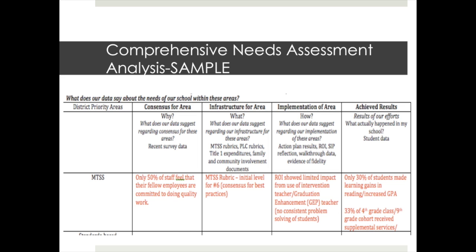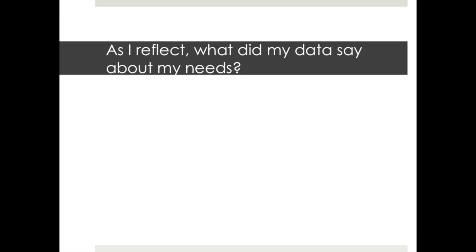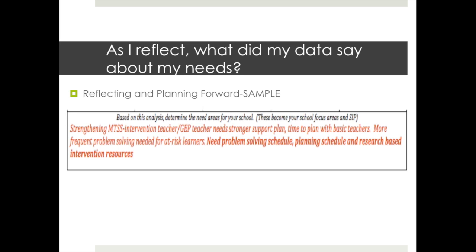When reviewing why this might be, we acknowledged that we did not have strong support structures in place for either teacher, and there was no consistent problem-solving of the at-risk students to plan their interventions and monitor their progress during the year. At the end of the year, only 30% of students served by these teachers made progress either in learning gains in reading or in an increased GPA. A significant percentage of students — actually 33% — were served by these support staff members. So the need exists for support, but we did not make significant progress with the 4th graders served by the intervention teacher and the 9th graders served by the graduation enhancement teacher. It is clear that we still need to strengthen our tiers of support, but not without a stronger support plan for our intervention and graduation enhancement teacher, including time to plan with classroom teachers and frequent problem-solving for these at-risk learners.